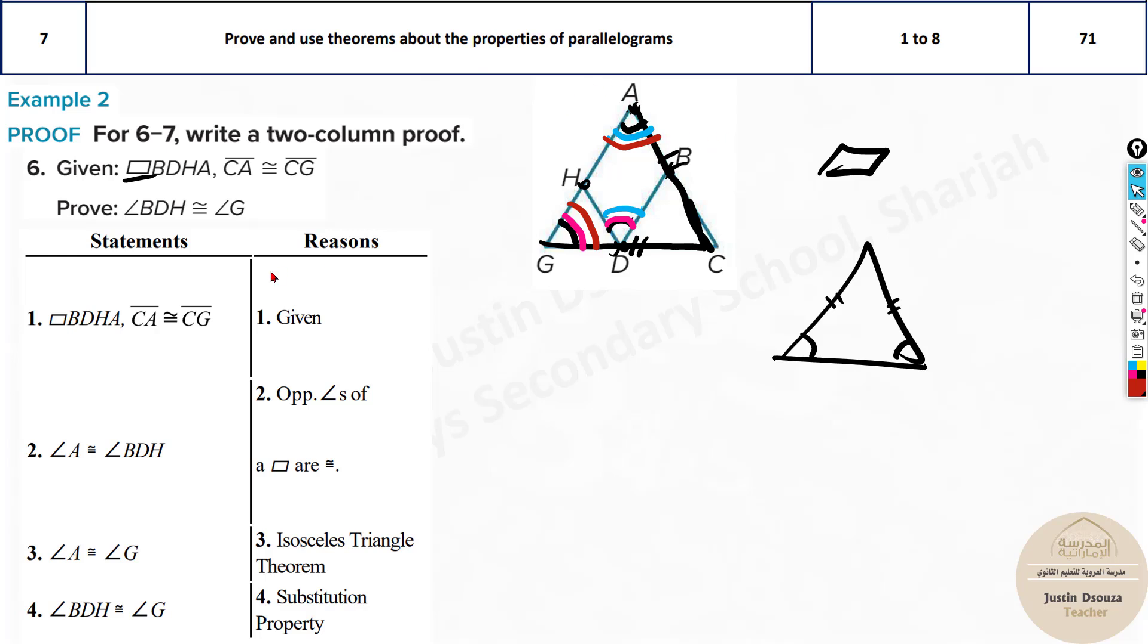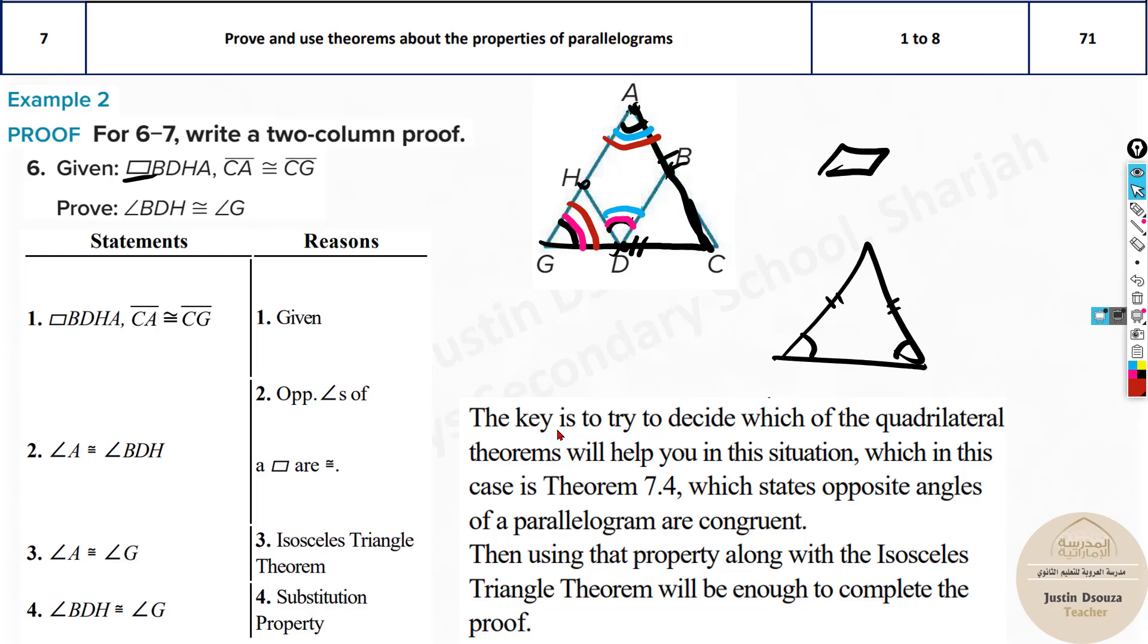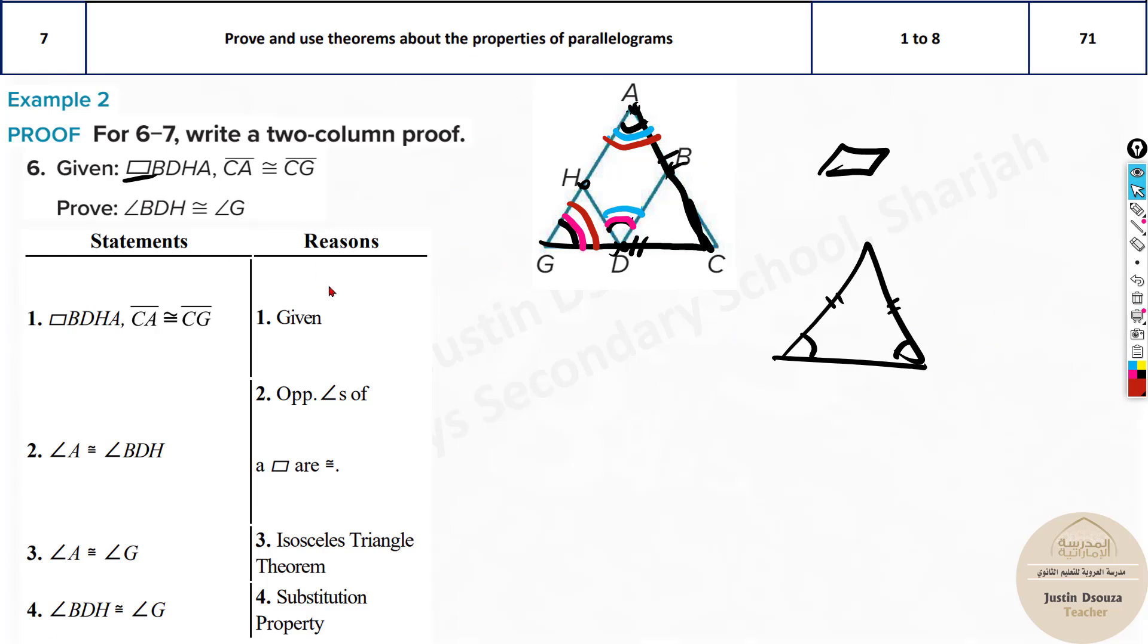So make this by parts. You directly can't jump to the conclusion. Look into the first part. BDH is over here. So what is this equal to? This is equal to A. So write that. And now, can you connect this A and G? Yes, A and G are also equal from isosceles triangle property. This is because opposite sides of the parallelogram are equal. First one. Next is isosceles triangle theorem. Now we know A and A from transitive property or substitution property. We have BDH is congruent to G. That's it. That's how we solve this problem.